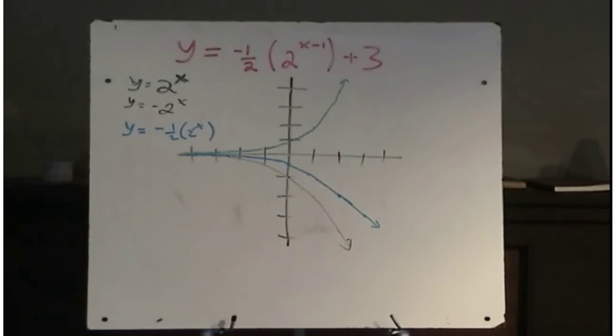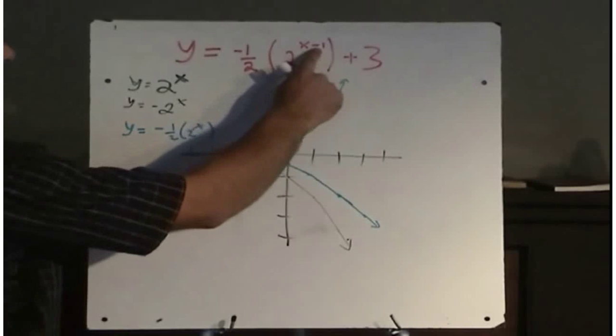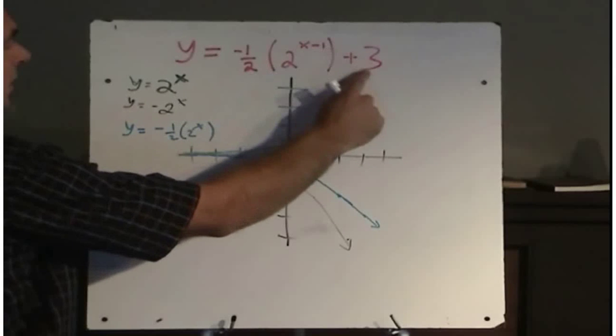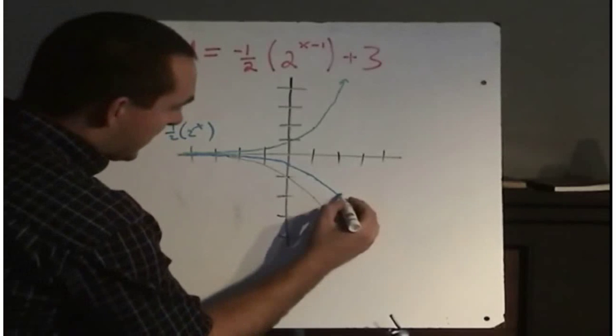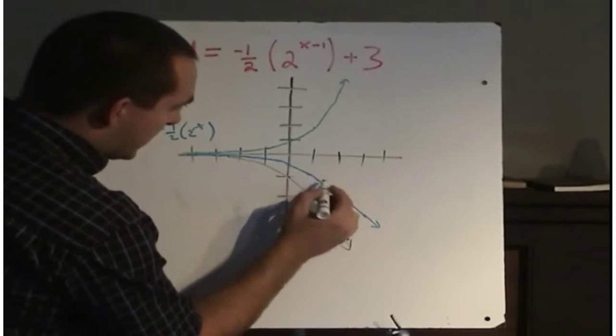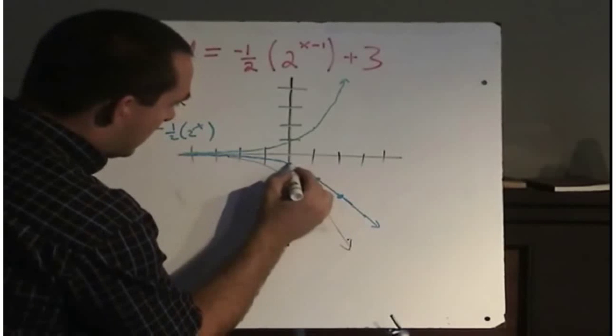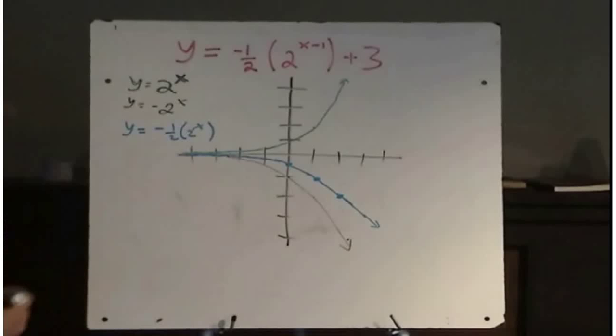And then the last thing I have to do is move it right 1 and up 3. Right 1 and up 3. I'm going to get these key points back on here again. I'll make them a little bit bigger. Okay, I'm going to work with those 3 key points.